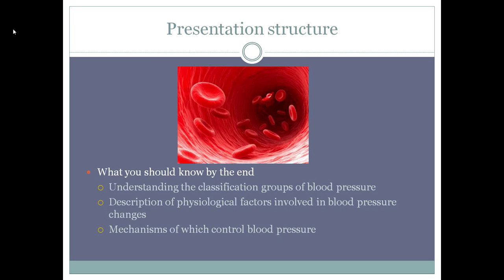Presentation structure. This topic has been broken down into three smaller questions: the classification of blood pressure, the physiological factors influencing changes in blood pressure, and the mechanisms which can control blood pressure. The questions have been broken down into further subcategories, where in classification of blood pressure, the different age groups and how they differ are addressed. The physiological factors are described separately, including their mechanisms of control. All figures and tables have been included to assist with understanding the information.